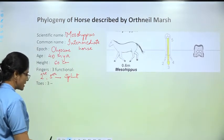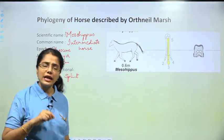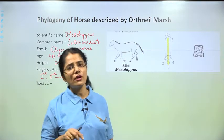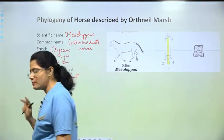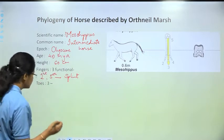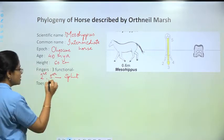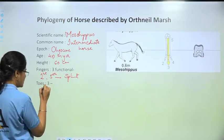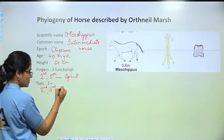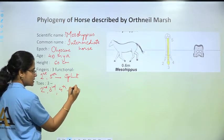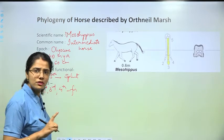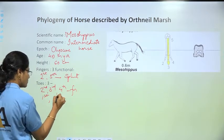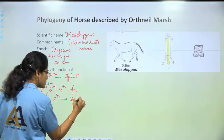For toes, Mesohippus also had three toes. The second, third, and fourth were functional, and the first and fifth had become splint.